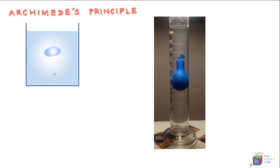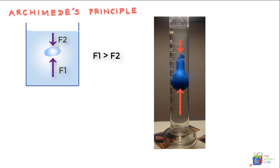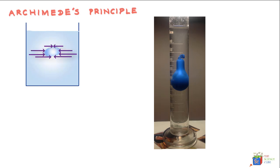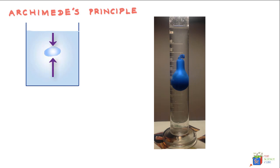From earlier lessons, we know that this sack of water will be subjected to collisions by the molecules of water all around it. The pressure on top of the sack would be less than the pressure on the bottom of the sack. Therefore, the force vectors at the bottom — due to molecular collisions — would be longer than those on the top. The water column above the bottom side of the sack is greater than the water column above the top side.